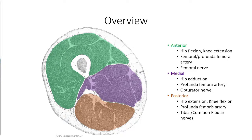Before diving in, let's return briefly to this overview slide of the compartments of the thigh. In the previous session, we discussed the anterior and medial compartments. We complete the picture today with a look at the posterior compartment. This is made up primarily of the hamstring muscle group, responsible for hip extension and knee flexion. It's supplied by perforating arterial branches off the profunda femoris artery and is innervated by specific nerve branches from the sciatic nerve.